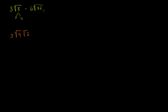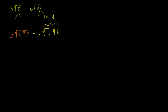Now let's look at 32. We want to do the square root of 32. 32 is 2 times 16, and 16 is a perfect square, so we could stop there. So this second expression can be written as minus 6 times the square root of 16 times the square root of 2. The square root of 16 times 2 equals the square root of 16 times the square root of 2 — we saw that with our exponent properties.